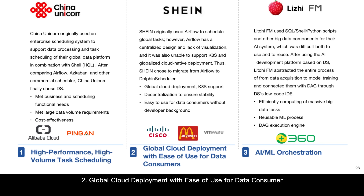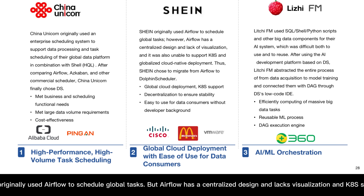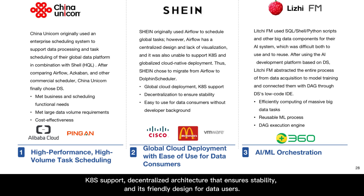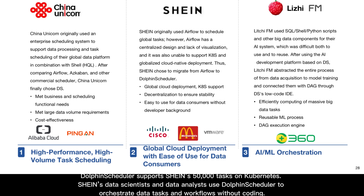Case 2: Global cloud deployment with ease of use for data consumers. Shine originally used Airflow to schedule global tasks, but Airflow has a centralized design and lacks visualization and Kubernetes support, making global deployment in cloud-native environments hard. Shine migrated from Airflow to Dolphin Scheduler for its global cloud deployment, Kubernetes support, decentralized architecture that ensures stability, and friendly design for data users. Dolphin Scheduler supports 50,000 tasks on Kubernetes, and data scientists and analysts use it to orchestrate data tasks and workflows without coding.